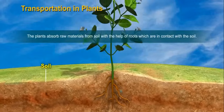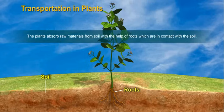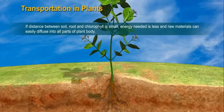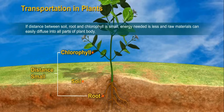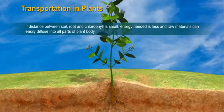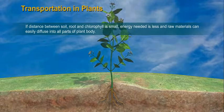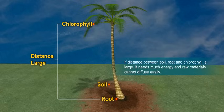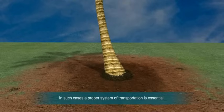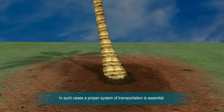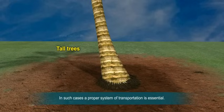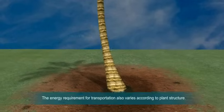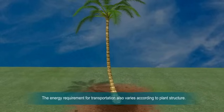Plants require raw materials like soil nitrogen, phosphorus, and other minerals to build their bodies. Plants absorb raw materials from soil with the help of roots which are in contact with the soil. If the distance between soil, root, and chlorophyll is small, energy needed is less and raw materials can easily diffuse into all parts of the plant body. If the distance is large, much more energy is needed and raw materials cannot diffuse easily. In such cases, a proper system of transportation is essential — for example, in tall trees.